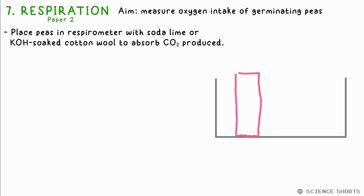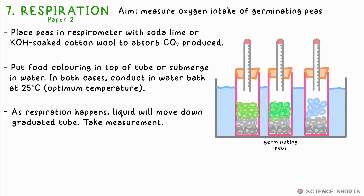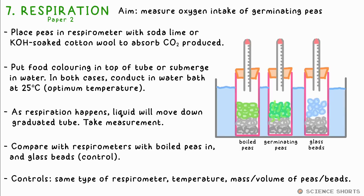Biology 7: respiration. We use a respirometer to measure the rate at which oxygen is absorbed by germinating peas. The tube has a small opening at the end to allow the pressure to equilibrate. A drop of food colouring is inserted in the end, which will move down the tube as the pressure decreases inside. Alternatively, the tubes could be submerged in water. Either way, the liquid will move down the graduated tube due to oxygen being absorbed by the peas, and the carbon dioxide produced being absorbed into the soda lime. You can also use cotton wool dipped in potassium hydroxide solution. It's best to put these in a water bath at 25°C for, say, 30 minutes, as this is the optimum temperature for respiration in the peas. You can then compare the result against two other respirometers under the same conditions — one with boiled peas in, and another with just glass beads in as a control.